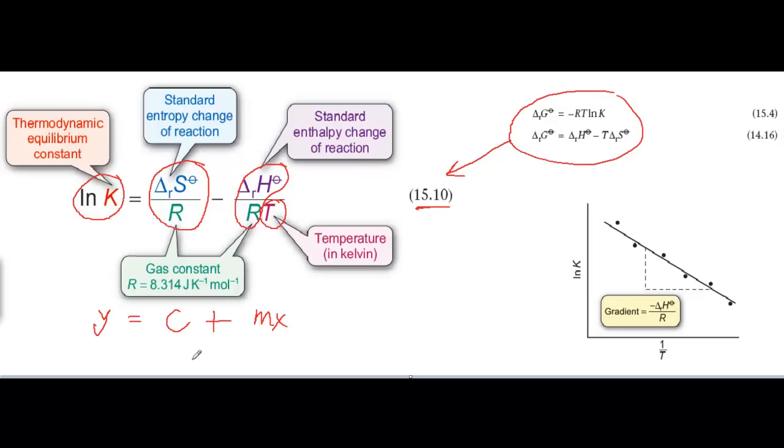We measure K at several different temperatures, and then plot a graph of the natural logarithm of K against one upon T. The gradient of this graph is minus delta H over R, and the intercept with the vertical axis is delta S over R.